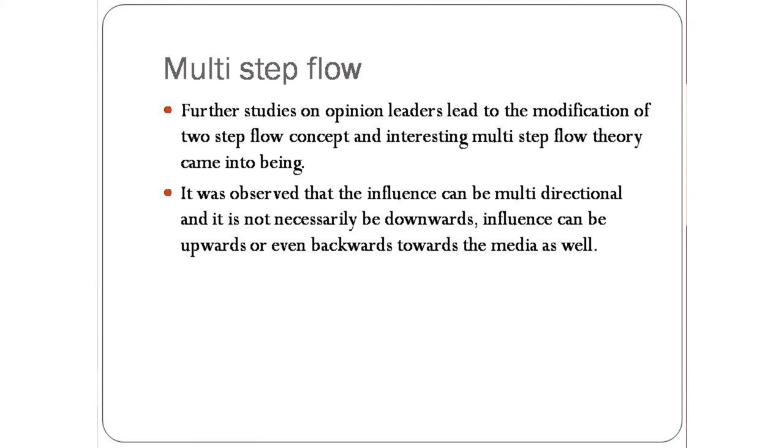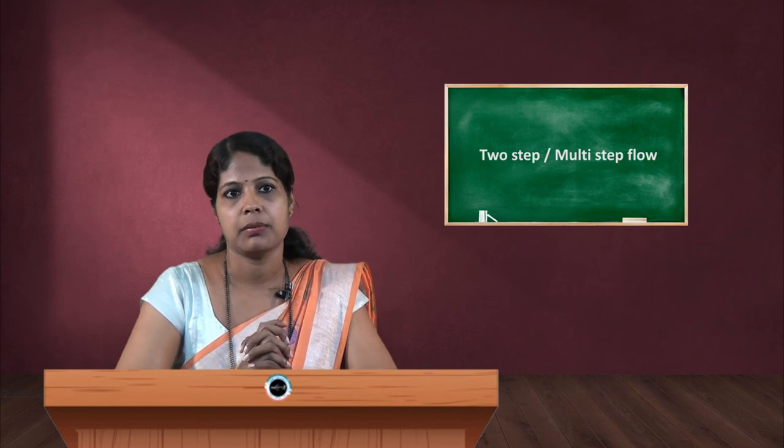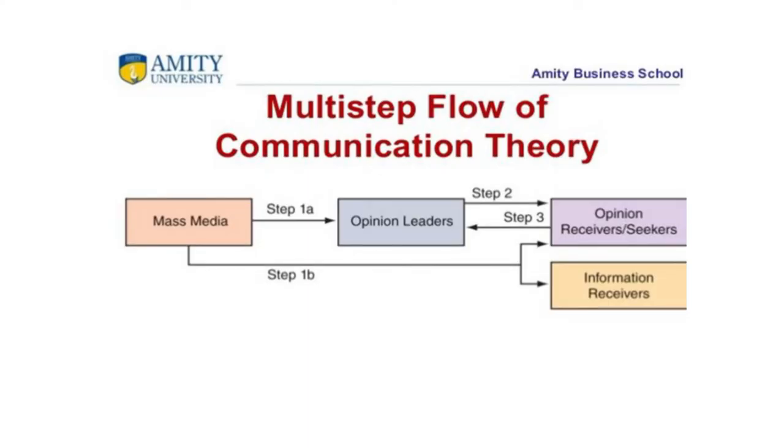It cannot be top to bottom flow of information; there may be other directions of message flow. If you see the multi-step flow communication theory model, mass media sends messages to opinion leaders, and then opinion receivers receive messages from opinion leaders. In another way, mass media directly sends messages to information receivers. Like-minded people debate and discuss with each other, and sometimes opinion receivers can send their opinion back to opinion leaders and then to mass media.